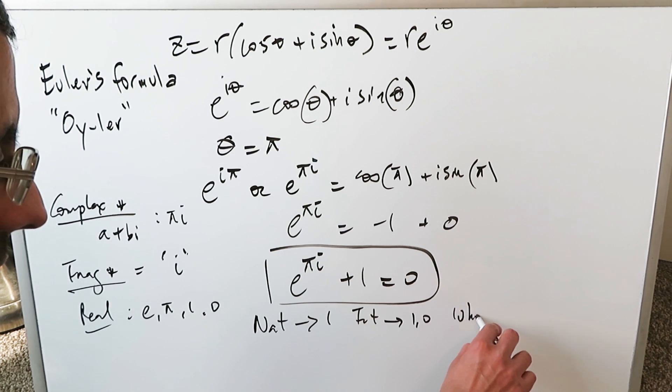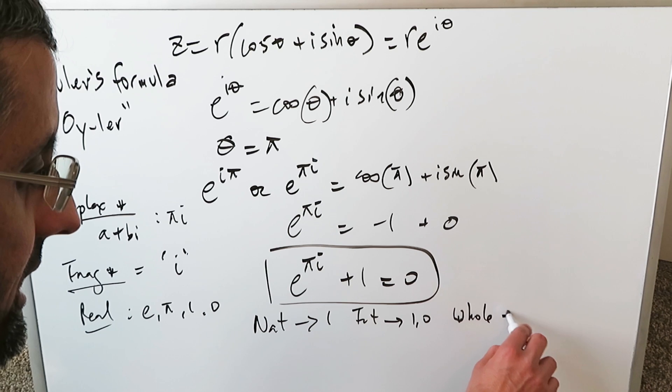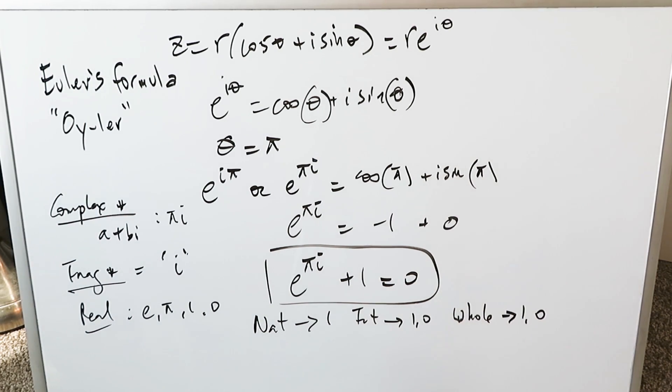You have whole numbers over here and you can see that to be one and zero. In addition to that you have irrational numbers here, E and pi, but then you also have rational numbers over here which are zero and one.